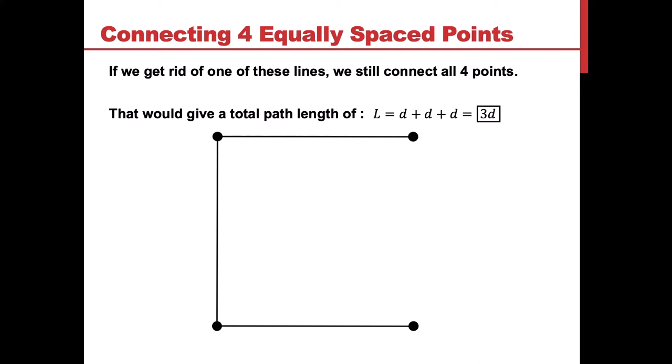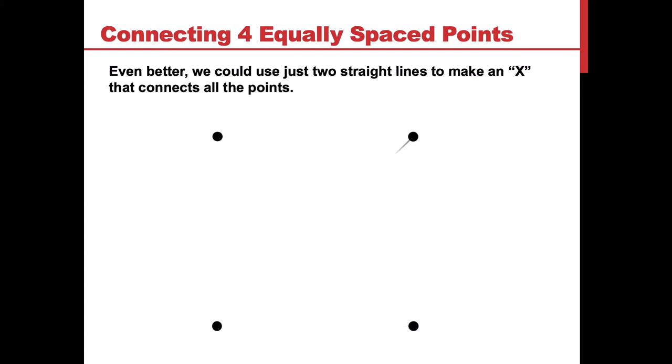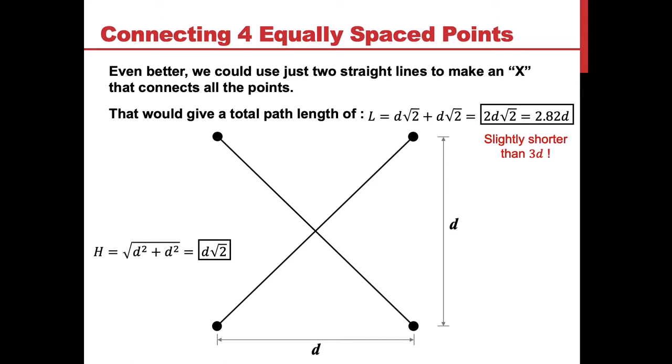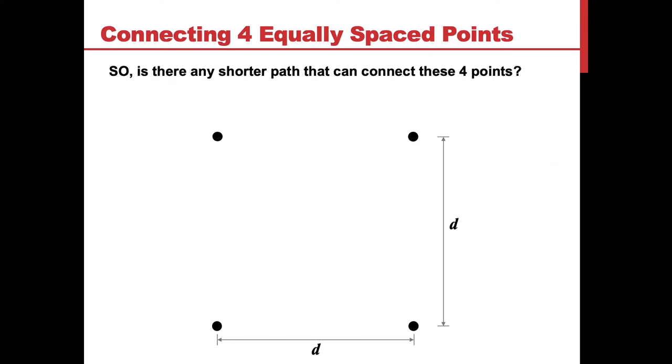That's a better total path length, but we can think of some other lines that might be even better. The next obvious one might be to just do an X, so we connect each corner by drawing a line straight across. To calculate that total path length, we've got to use either Pythagorean theorem or some trigonometry. We'll find out that we've got a total path length of that X as being close to 2.82 times d. That's definitely shorter than 3d. But you might think, is this actually optimized or not? Is there any other shorter path? And there actually is.